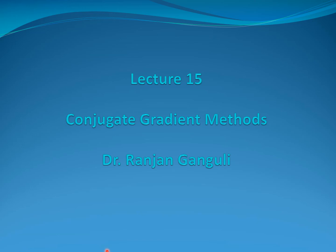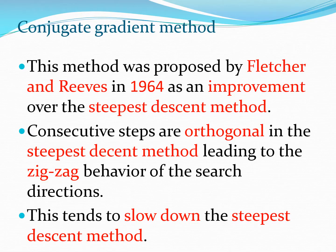In today's lecture we are going to discuss the conjugate gradient methods. This method was first proposed by Fletcher and Reeves in 1964 and essentially seeks to be better than the steepest descent method.